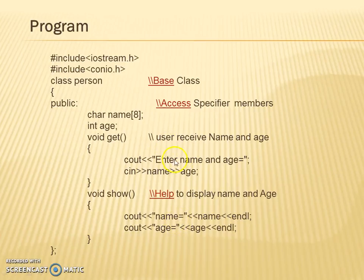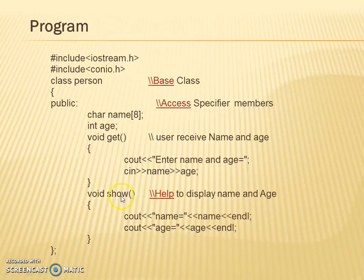Over here, we ask the user to enter the name and the age. Using cin, we accept the name and age. Accordingly, we show the user what name and age is displayed. The name and age will be displayed onto the screen using the void show function.